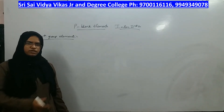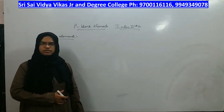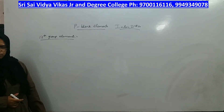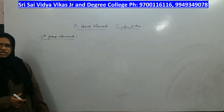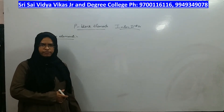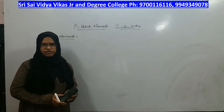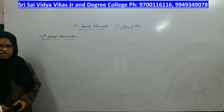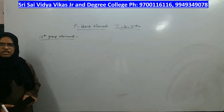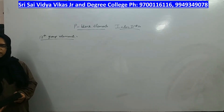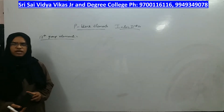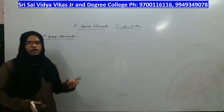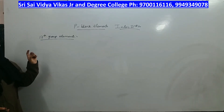Welcome to yet another lecture on P-Block Elements. In the last video, we discussed about 16th group elements which include oxygen, sulfur, selenium, tellurium and polonium. We also covered compounds related to oxygen like dioxygen, oxides, and sulfur dioxide, as well as allotropes of sulfur. All of those were 16th group elements.